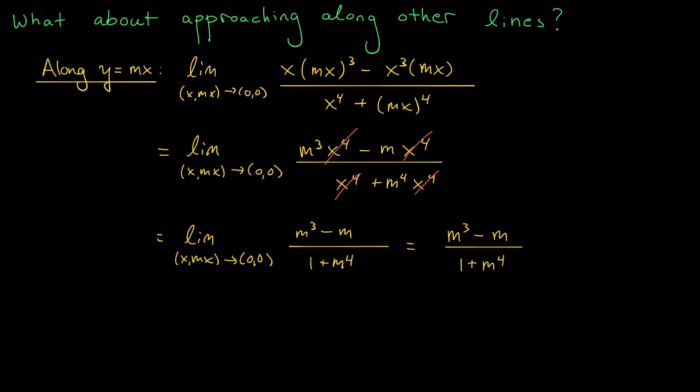Ooh, now this is pretty interesting. This seems to suggest that my limit depends on m. It depends on the slope of the line that I take to the origin. So presumably, I could find two different values of m that give me different values for my limit. Ah, that would be enough to show that the limit doesn't exist. And that's exactly what we're going to do.